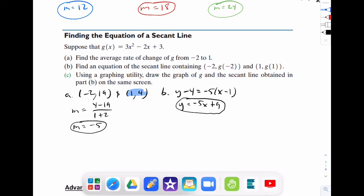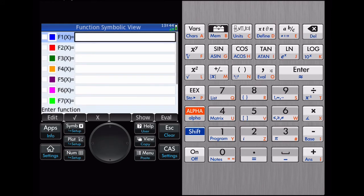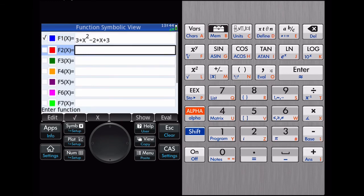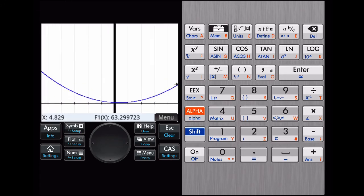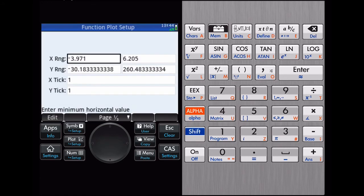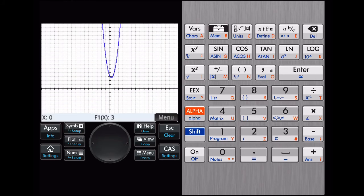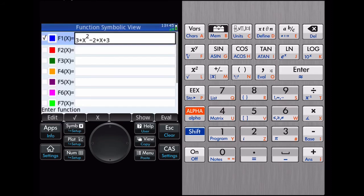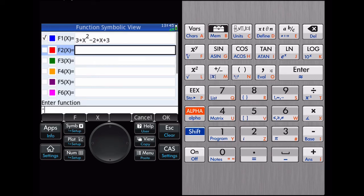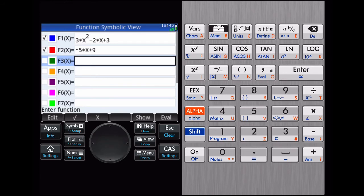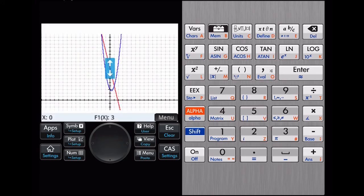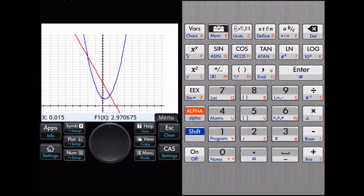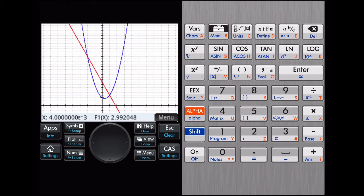It says use a graphing utility and draw the graph of g and the secant line. Go back to your calculator. Apps, function. Delete that. We're going to type in 3x squared minus 2x plus 3. When you graph it, notice how the scaling's kind of off now. We're going to reset it. Hit shift and then plot, then shift escape. That's going to standardize your plot to make it cleaner. Now that it's standardized, let's go back. Notice how we have our parabola. I'm also going to graph the line. Go back to symbol, tap the one right below it and put negative 5x plus 9. Now I can see both. Let's zoom a little bit so we can see both in a nice way. We're going to screenshot this and drop it into our notes.